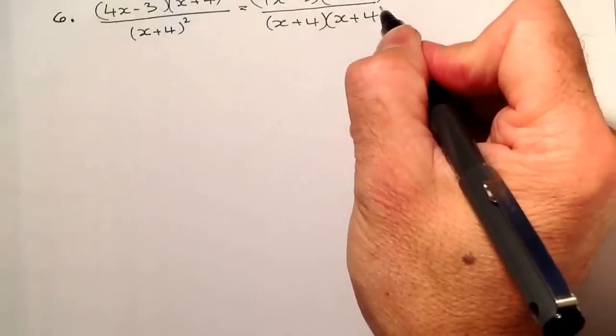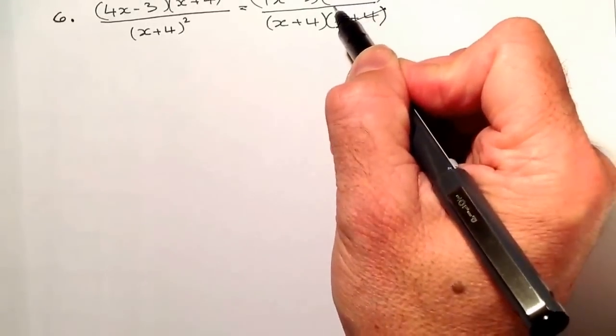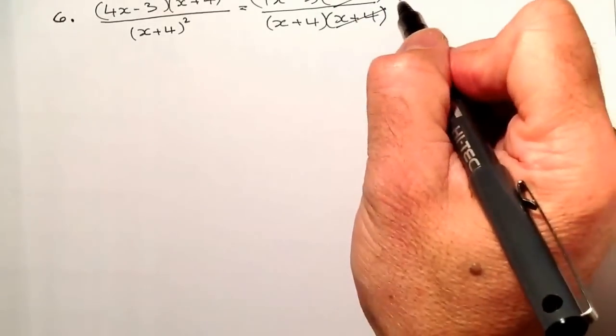What I'm going to do is on the top and the bottom, I can see an x plus 4 and an x plus 4, I'm going to cancel them out.